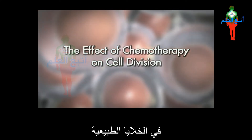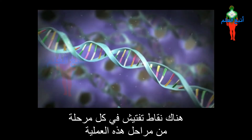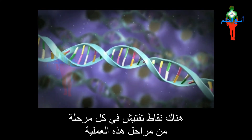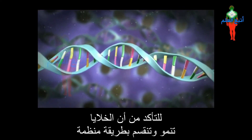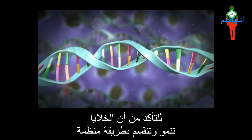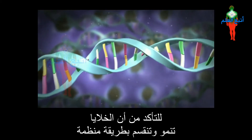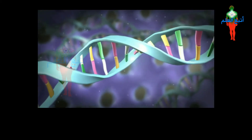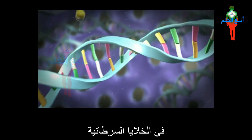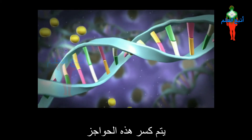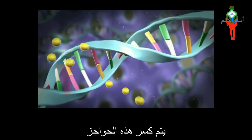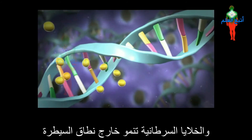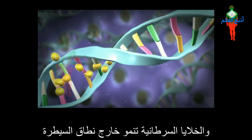In normal cells, there are checkpoints at every stage of this process to make sure that cells grow and divide in a regulated way. In cancer cells, these checkpoints are broken and cancer cells grow out of control.